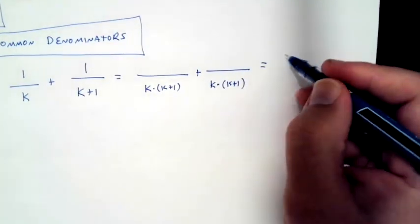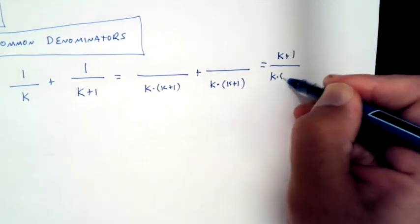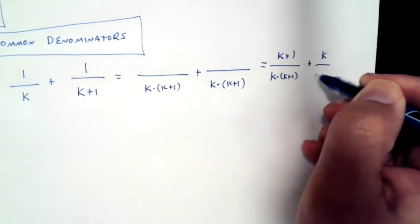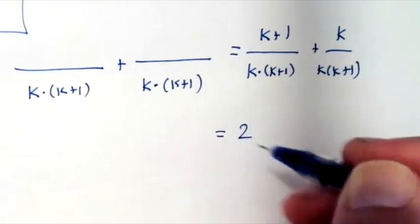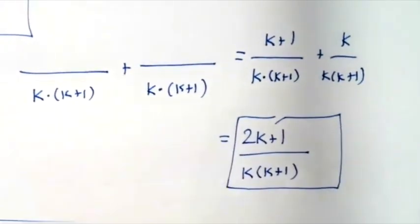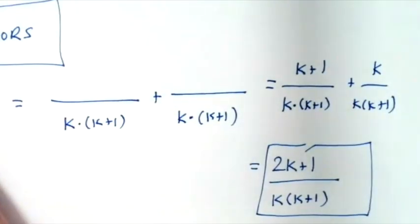We multiply each numerator by what is missing from its denominator, to get the quantity k plus 1 over k times k plus 1 plus another quantity k over k times k plus 1. Then the final answer is 2 times k plus 1 over k times k plus 1.